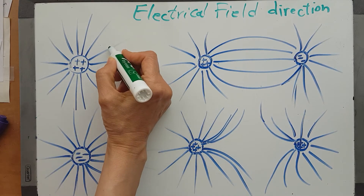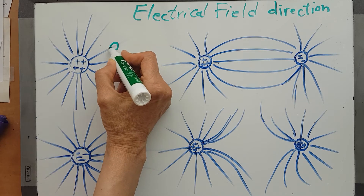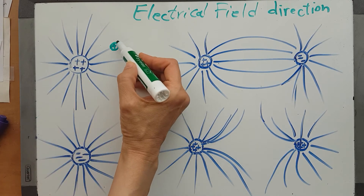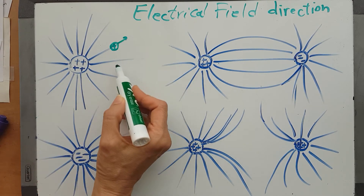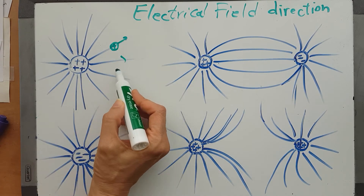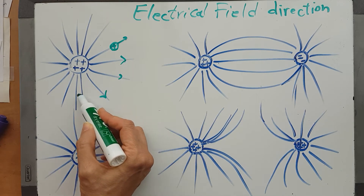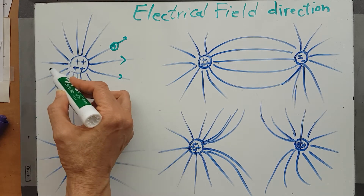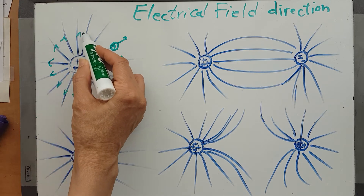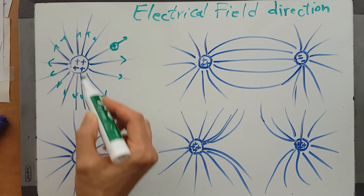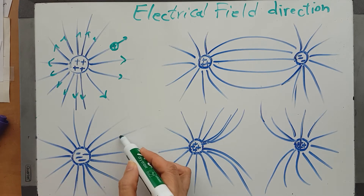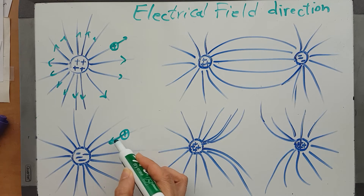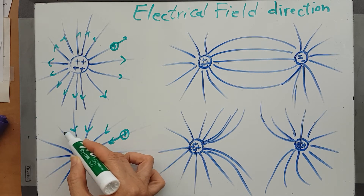For example, if I put one coulomb of positive charge here, this positive source charge is going to repel it. So the direction of the field points outward, because it's repelling all the positive charges. If I put a positive charge here near a negative charge, it's going to attract it.